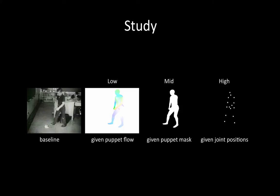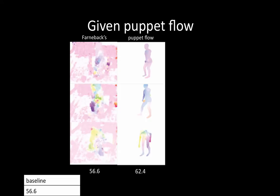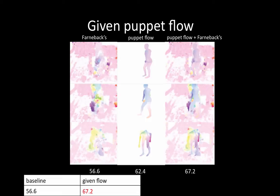With these annotations, we are ready to study algorithms and features. First, we run the baseline algorithm dense trajectories. We then replace the optical flow computed on the person with the optical flow generated from the puppet. Here we show the optical flow used in the baseline for three random frames. We then replace the optical flow with the puppet flow, improving the baseline by 6%. This suggests that having accurate optical flow on the person is important. We then combine these two flows by using puppet flow on the person and Farnbach's flow on the background, which leads to an improvement over puppet flow alone. We found that the background motion alone was not sufficient for recognition; by doing such a composition, we enhance the motion boundary around the person.